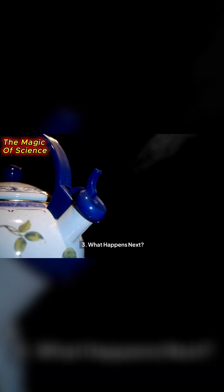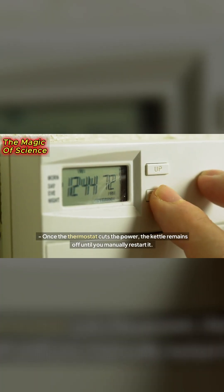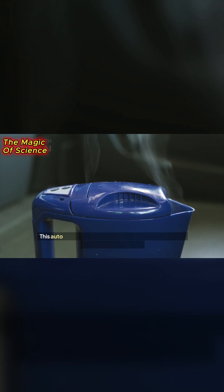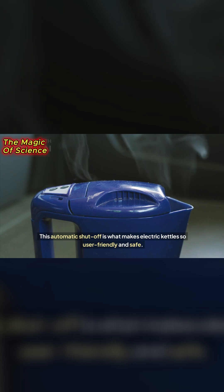3. What happens next? Once the thermostat cuts the power, the kettle remains off until you manually restart it. This automatic shut-off is what makes electric kettles so user-friendly and safe.